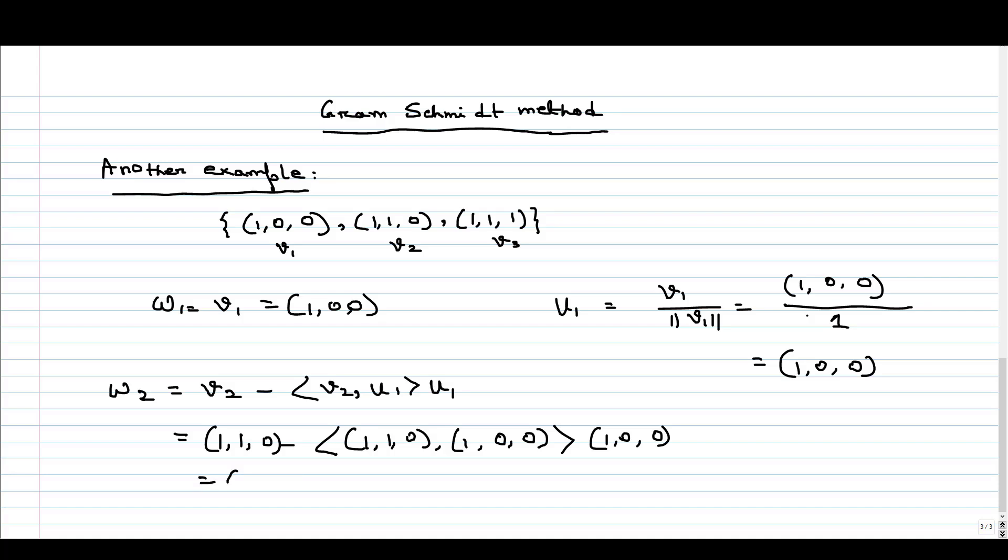If we calculate it, the inner product is nothing but 1. So 1 into (1, 0, 0). This will give us, the first coordinate will be 0, the second coordinate will be 1, and the third one is 0. So it is giving us W2 which is (0, 1, 0).